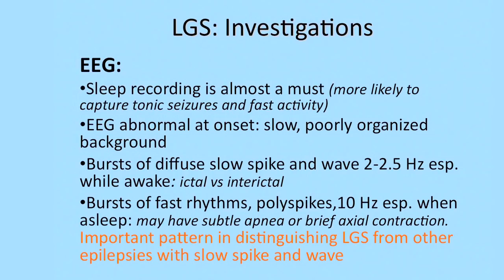Since the diagnosis relies so heavily on finding the classic EEG features, and since tonic seizures tend to occur mostly during sleep, a sleep EEG is essential. The background is abnormal early at onset, being slow and poorly organized. Then you start seeing diffuse slow spike and wave discharges occurring mainly while awake. Sometimes it is difficult to decide whether this is an ictal or interictal recording, and you have to focus on the fast rhythms essential for differentiating Lennox-Gastaut syndrome from other epilepsy syndromes.